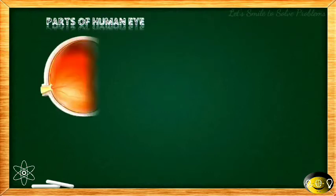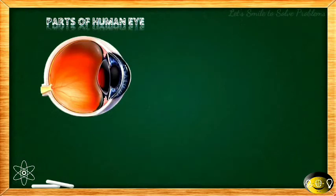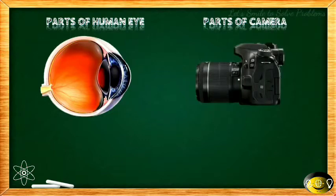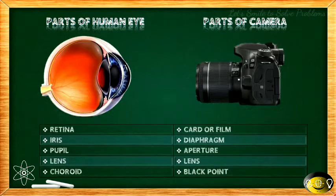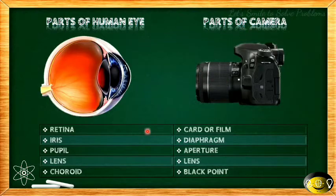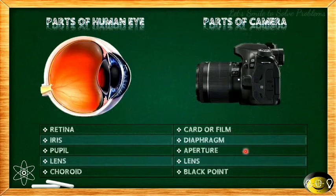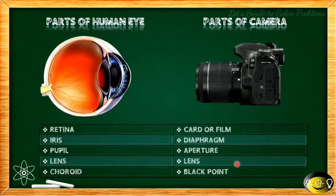First, let's look at the parts of the human eye and the camera. There are five basic parts for both. For the human eye: retina, iris, pupil, lens, and choroid. For the camera: in place of retina it is card or film; in place of iris it is diaphragm; in place of pupil it is aperture; lens remains lens; and in place of choroid it is the black point. We will see each one by one.